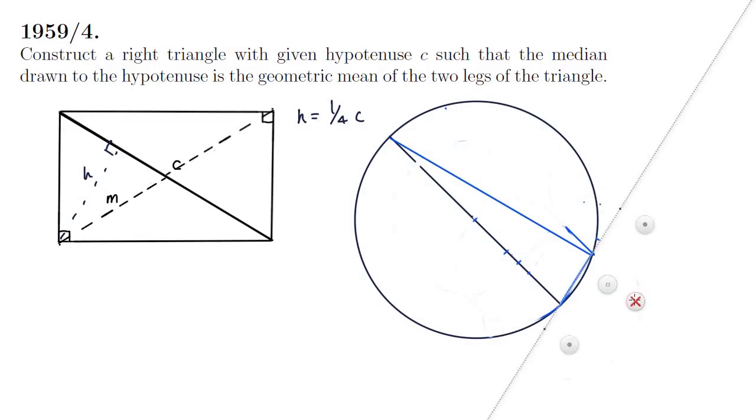So let's draw that in and there we have it, a right angle triangle with hypotenuse c which is the diameter and altitude h which is a quarter c. This will satisfy the requirements of the median to the hypotenuse being the geometric mean of the two legs of the triangle.